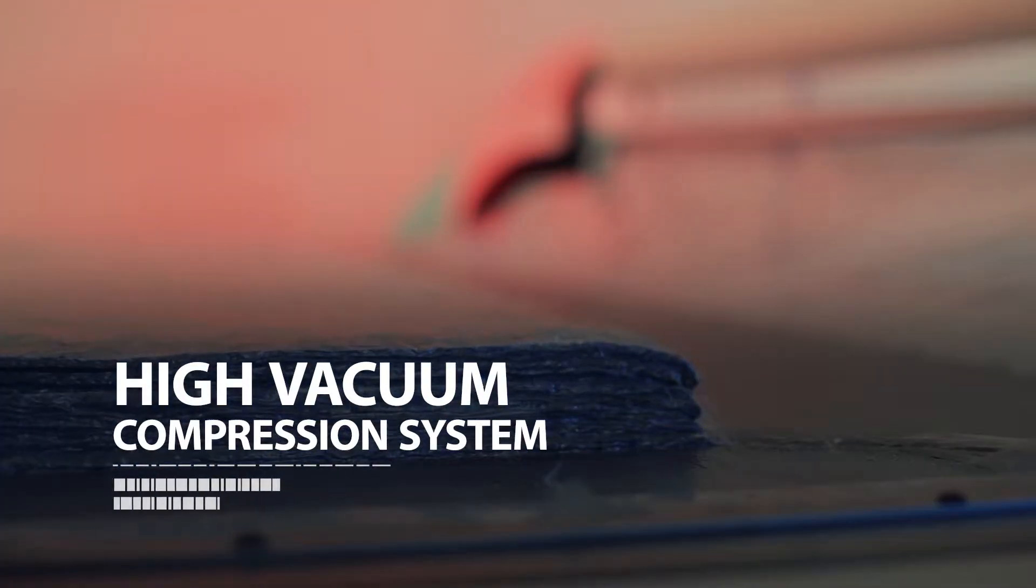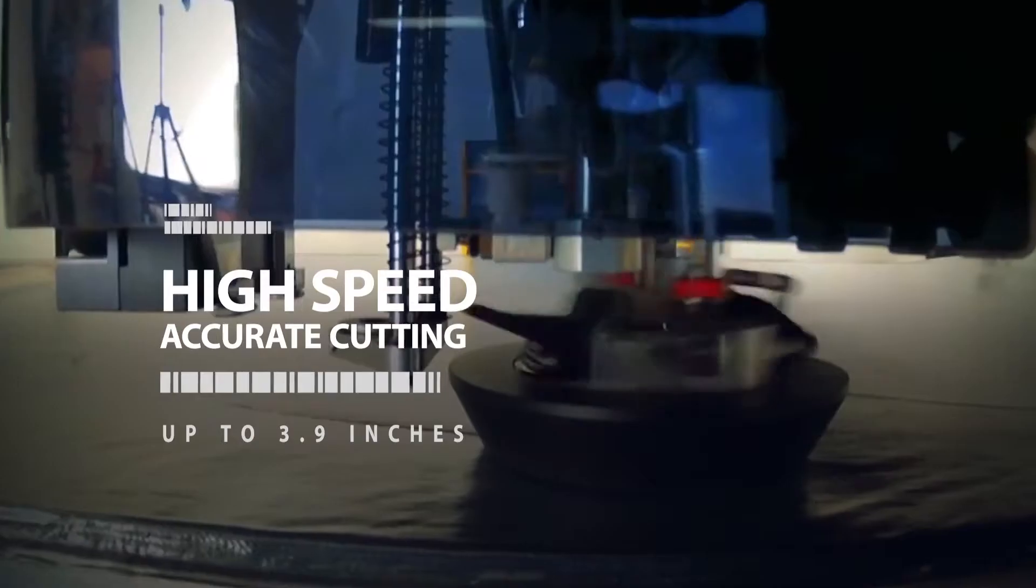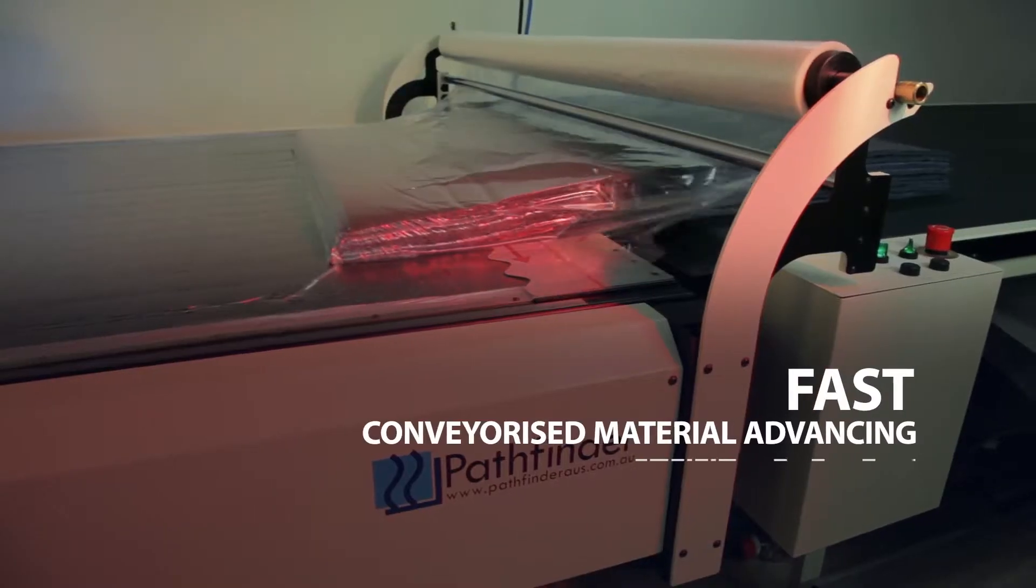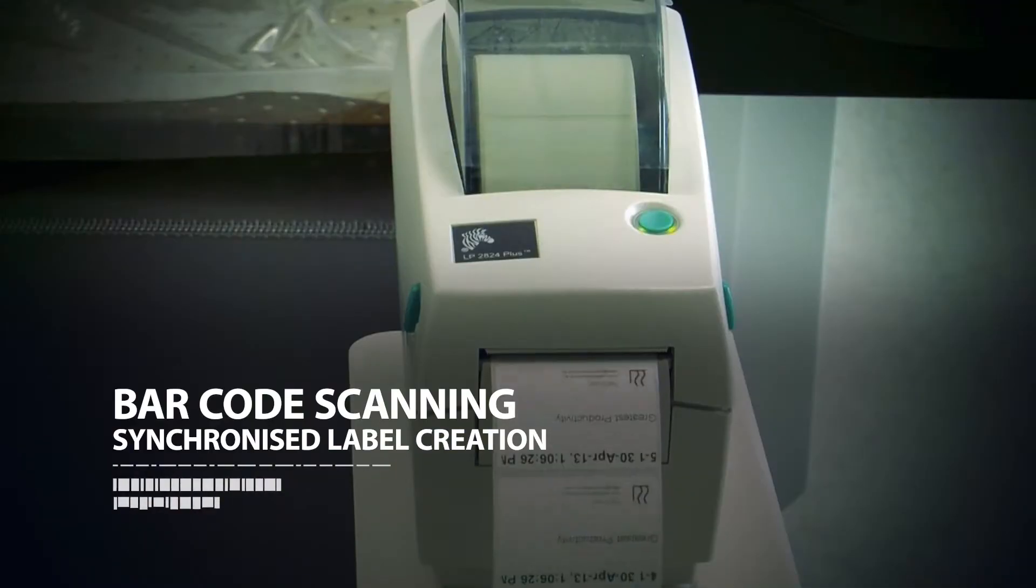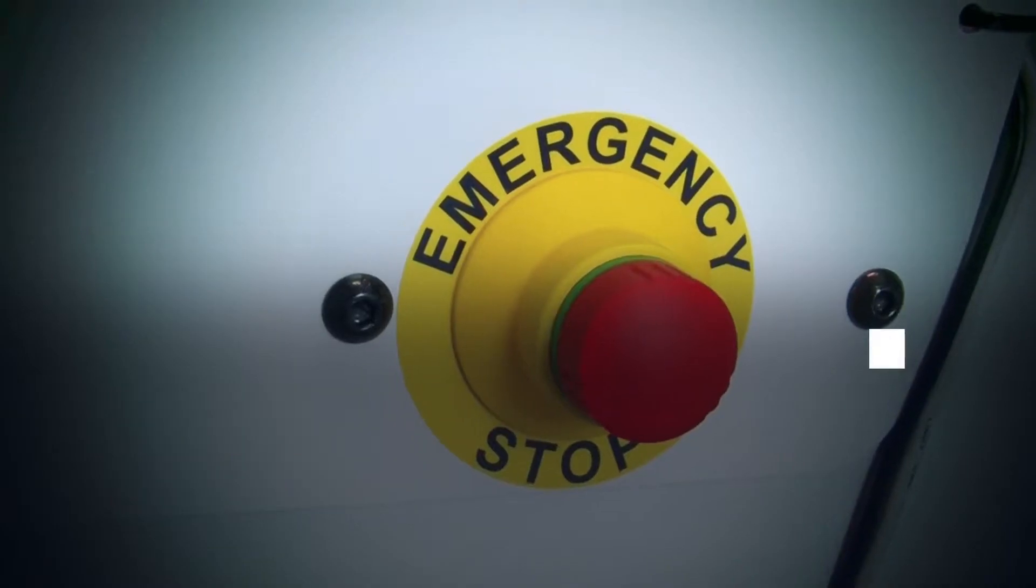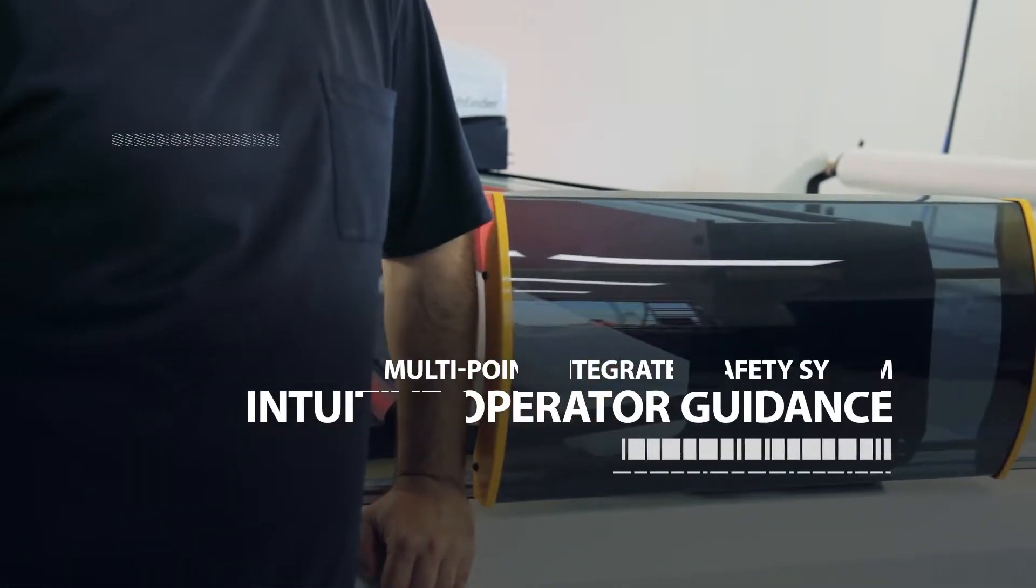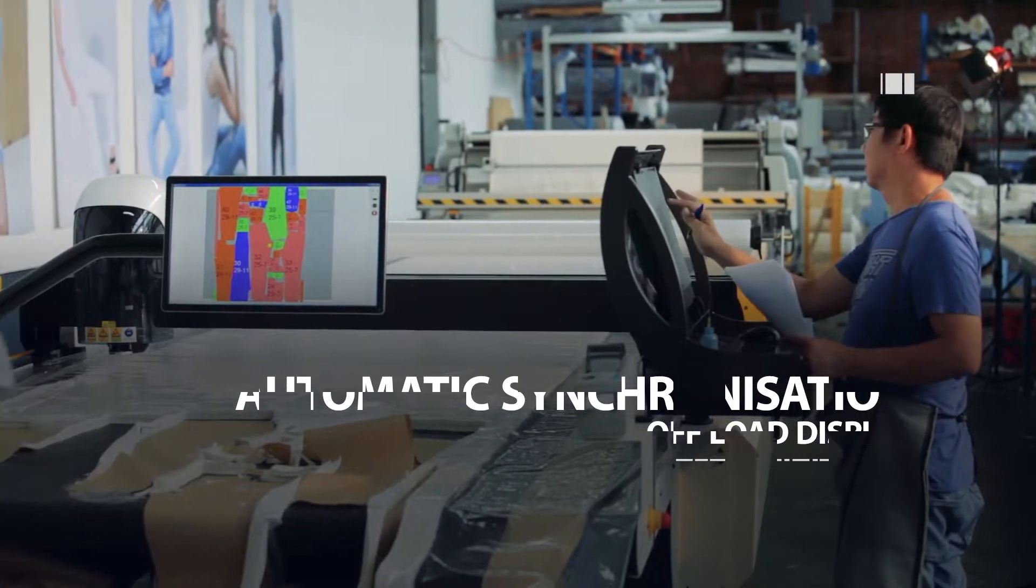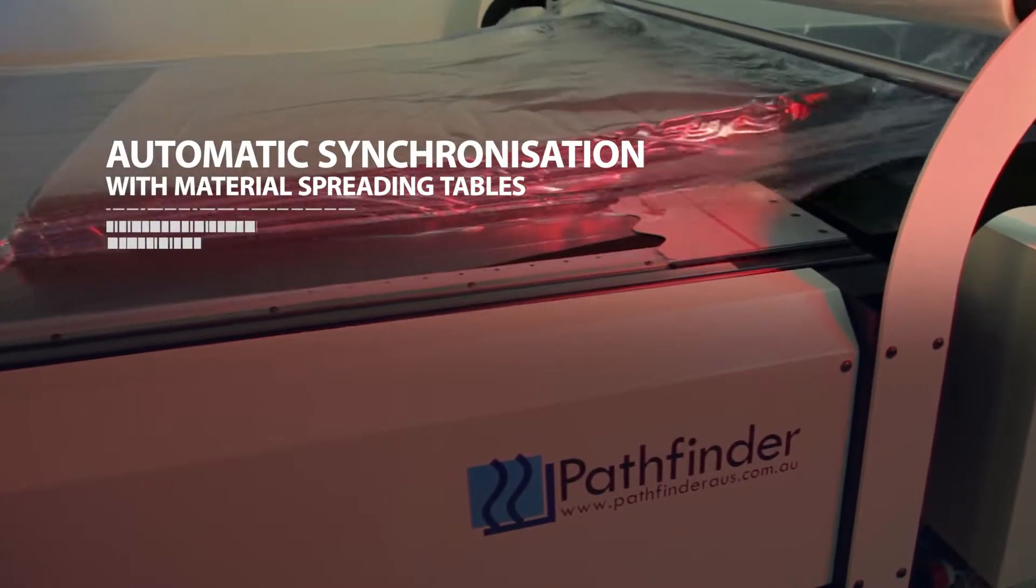The most efficient high vacuum compression system available, high speed accurate cutting up to 3.9 inches with Pathfinder's own quick draw sharpening system, fast conveyorized material advancing, barcode scanning and synchronized label creation, a multi-point integrated safety system with intuitive operator guidance, automatic synchronization of the offload display and automatic synchronization with one or more material spreading tables.